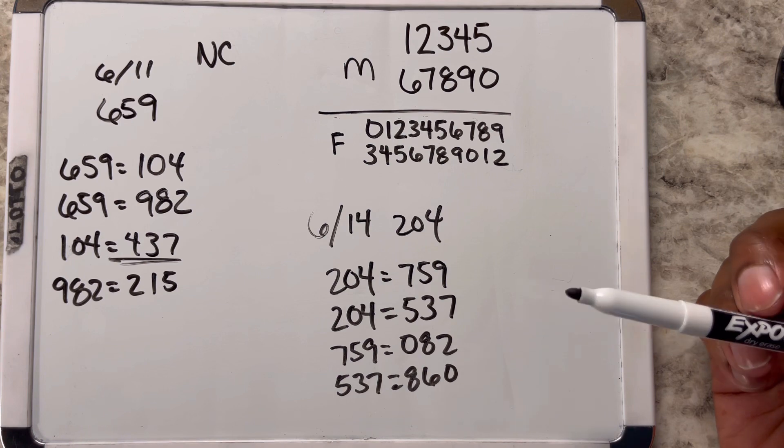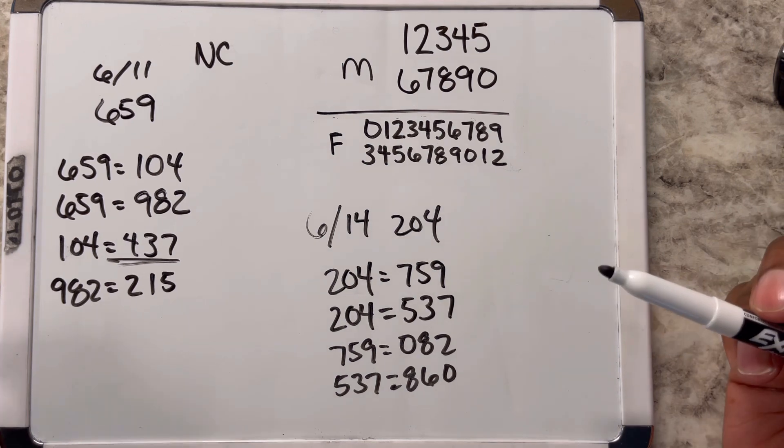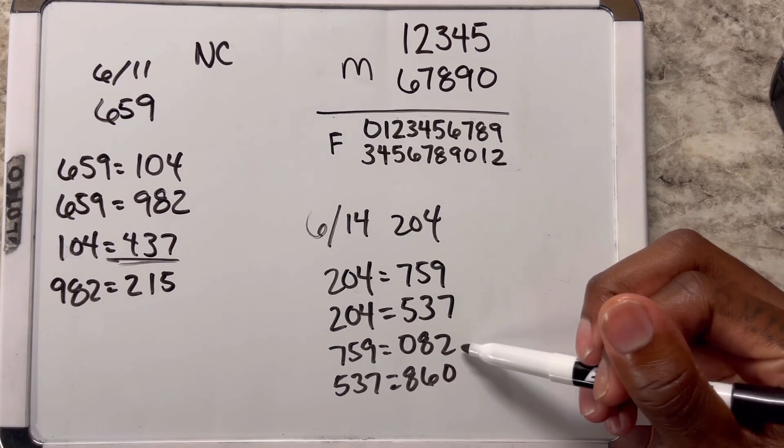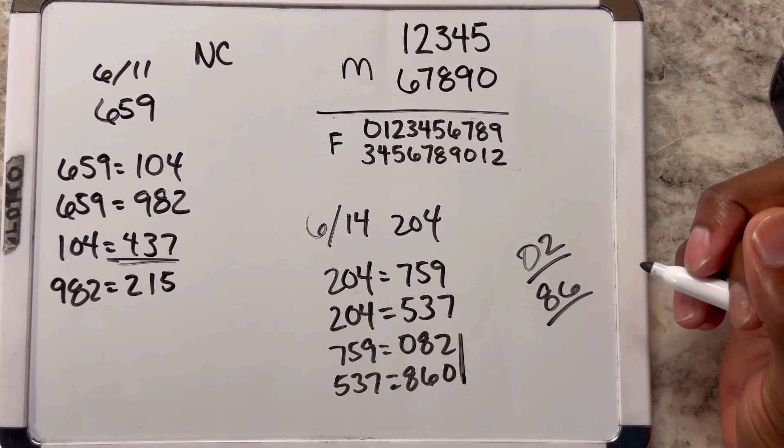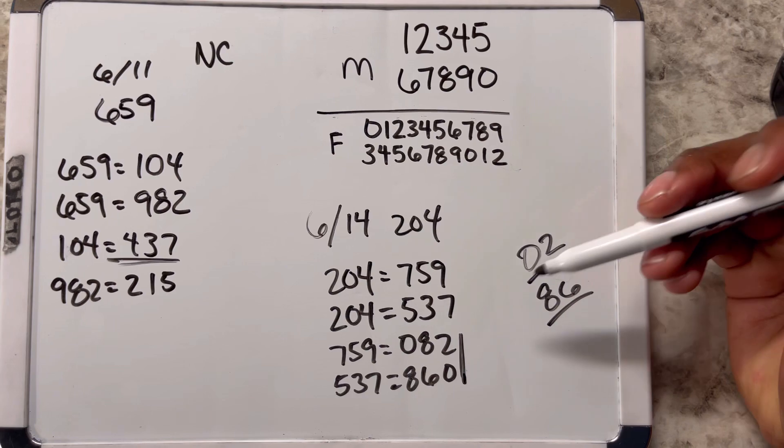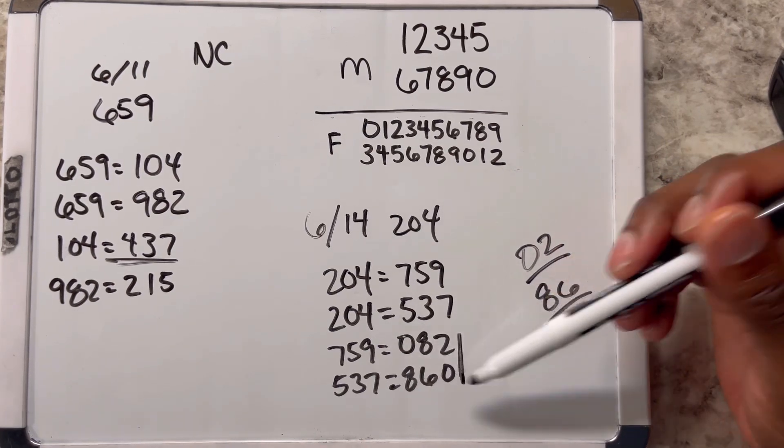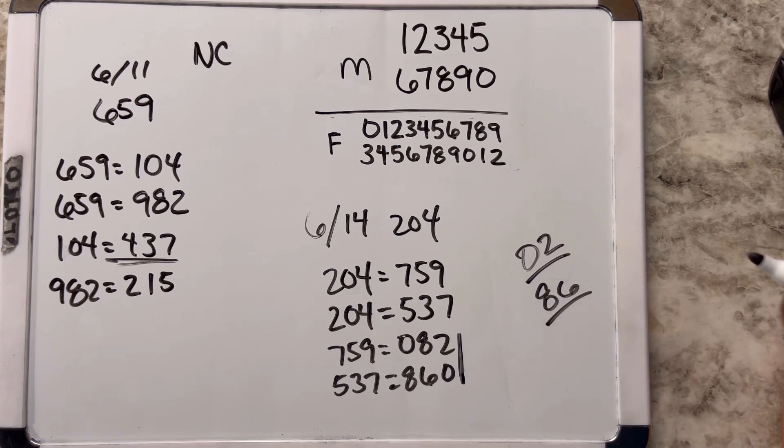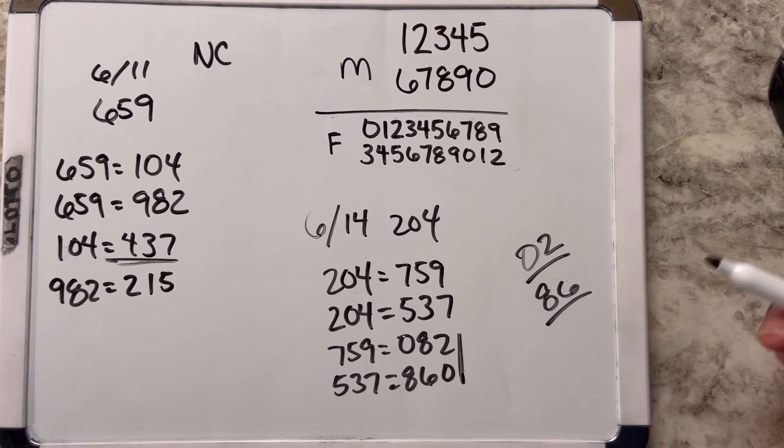Now you can play, and this is where the backtracking comes in. This is where you're supposed to understand the numbers that came out from the first to now, just pay attention to the patterns. For North Carolina, I definitely suggest something like these two right here. I'd play something like 082 or 860 if I was in North Carolina. The 0-2 pair and the 8-6 pair are definitely hot.